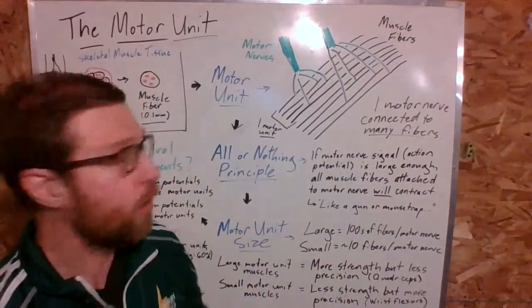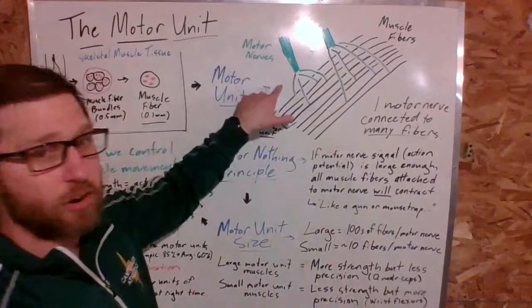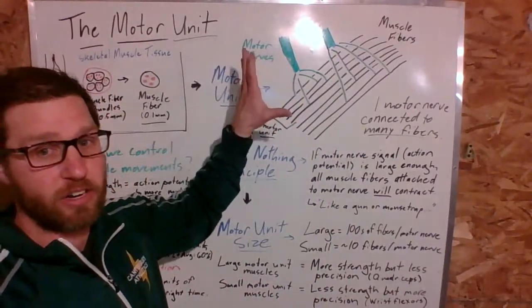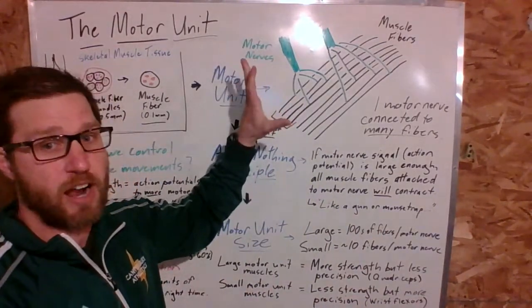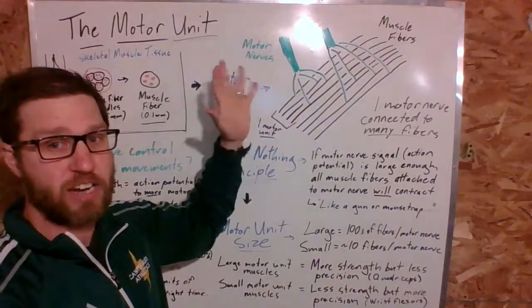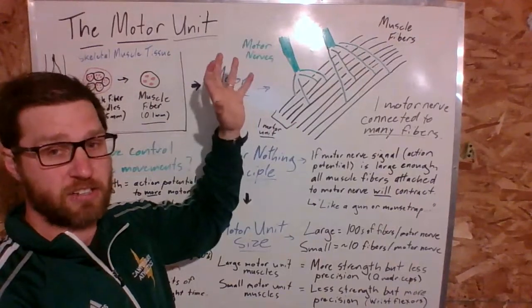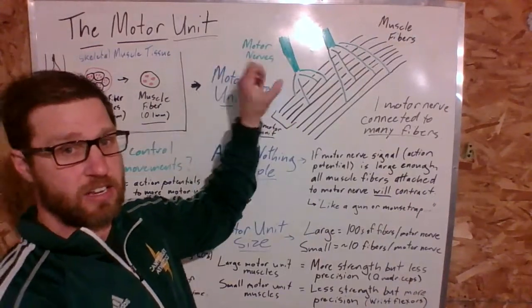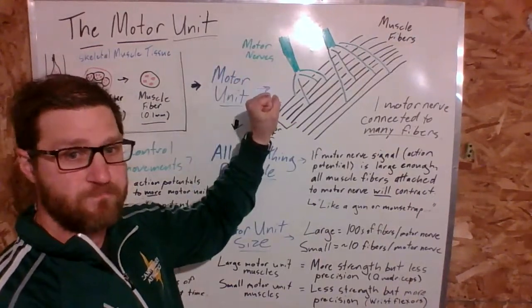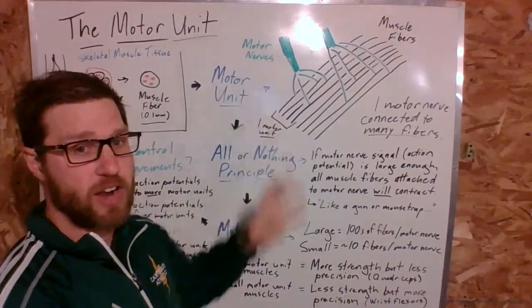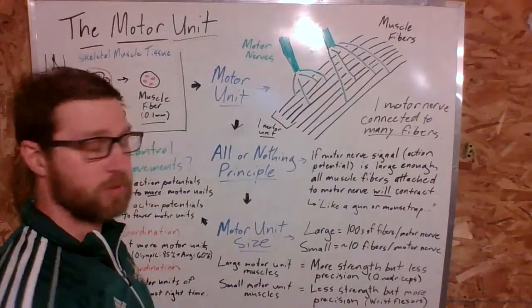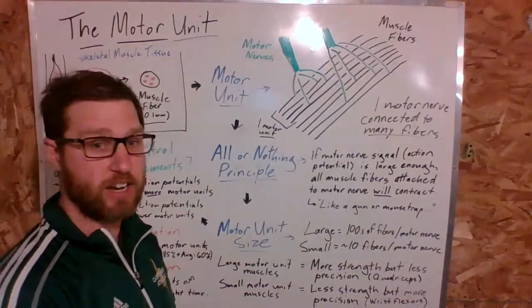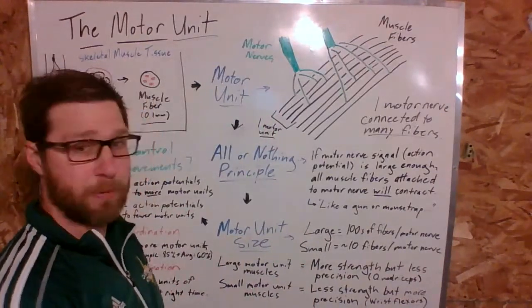My motor unit works the same way: it will either contract or not contract. My brain sends a large enough signal to say contract, or not — and that's how your muscle contractions happen.